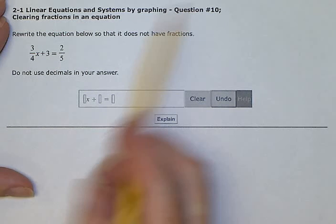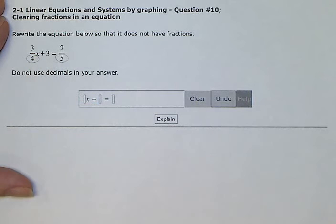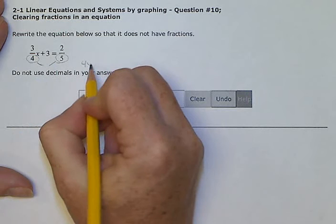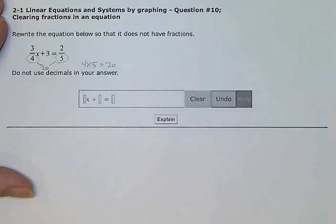So when we have a fraction, we're going to look at this number and this number. Those are the denominators. And we're trying to find a common denominator. We're going to multiply those together. 4 times 5 equals 20. We're going to use 20 to get rid of those fractions.